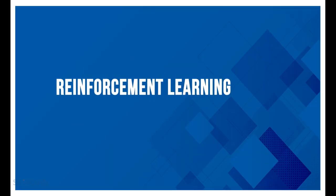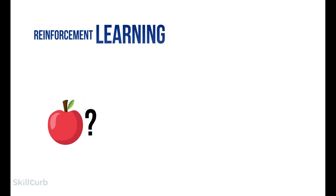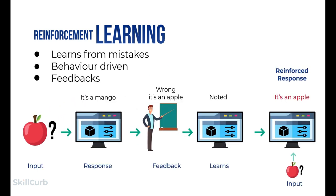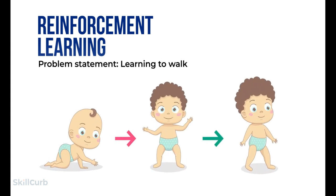The last type for discussion is reinforcement learning. This type is based on trial and error — the model learns from its actions and the feedback it receives. There are rewards and punishments to dictate good and bad behavior. For instance, we provide an apple as input to the algorithm. The response is not correct in the first attempt, so we provide feedback. The algorithm learns from the feedback and corrects its response. Reinforcement learning is goal-based.